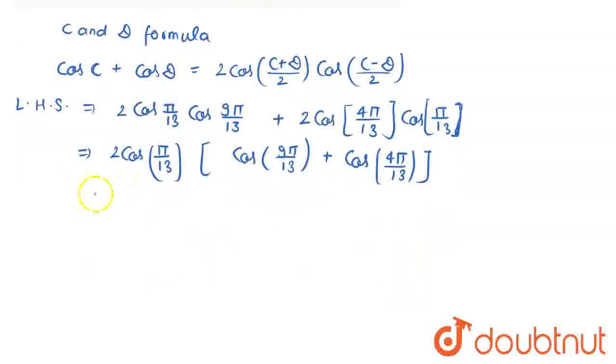I am going to use the expansion of cos C and D formulas again. I can write it as twice cos pi by 13 multiplied by twice. If I assume that my C is 9 pi by 13, and my D is 4 pi by 13, it becomes cos C plus D, that is, 9 pi by 13 plus 4 pi by 13, that is, 13 pi by 13, or simply pi divided by 2. Cos pi by 2, into cos of 9 minus 4, 5 pi by 13 by 2, that is, 5 pi by 26.